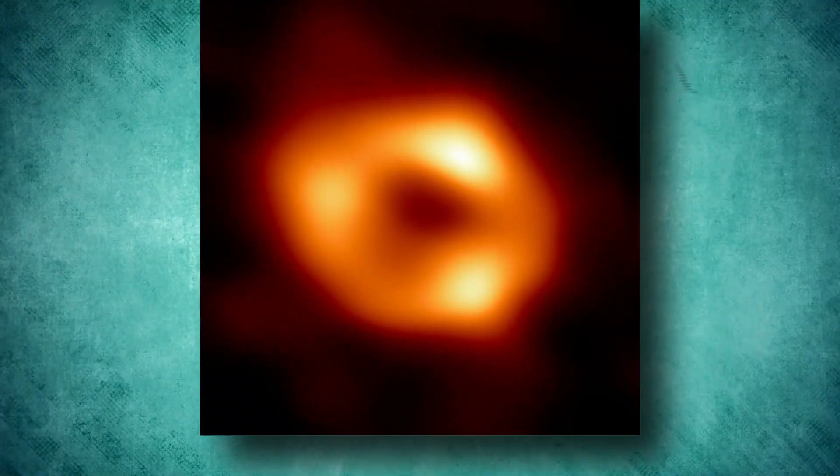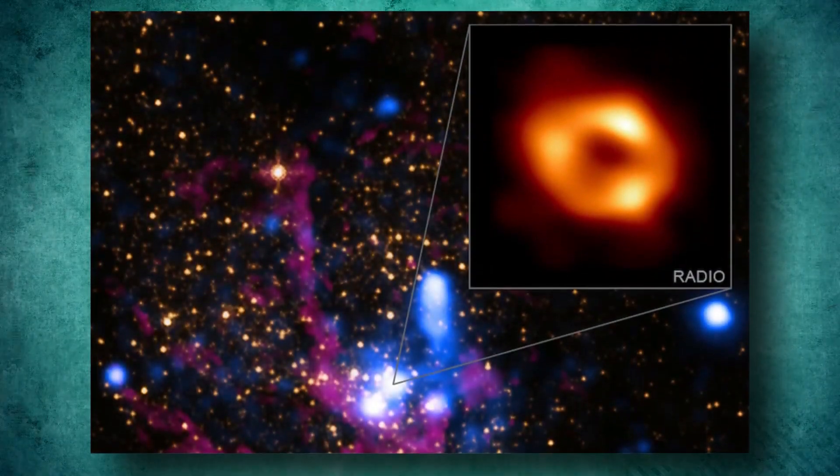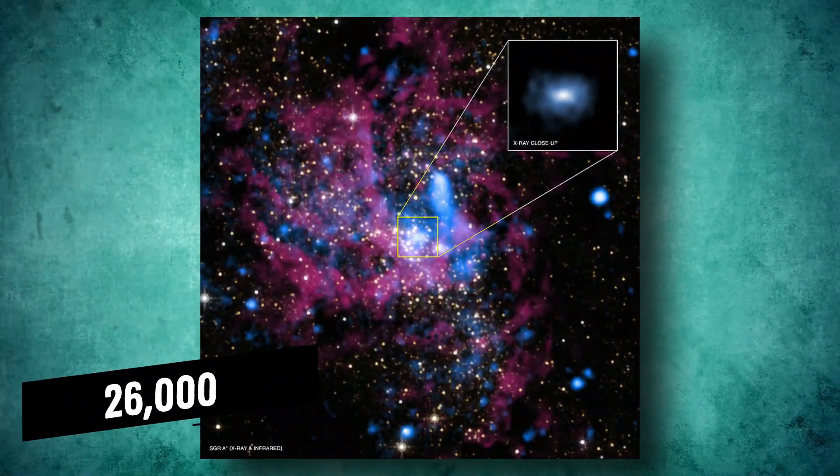At the heart of the Milky Way lies a supermassive black hole, Sagittarius A star. The colossal structure is about 4 million times the mass of the Sun and lies approximately 26,000 light-years away from Earth, according to a statement from NASA.